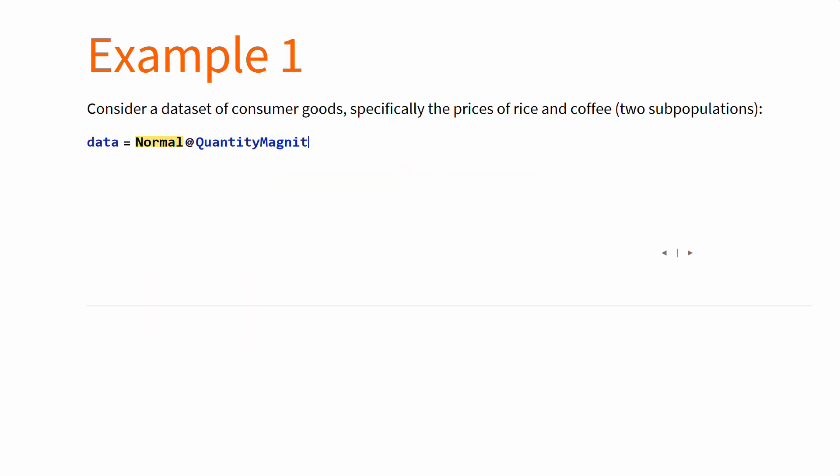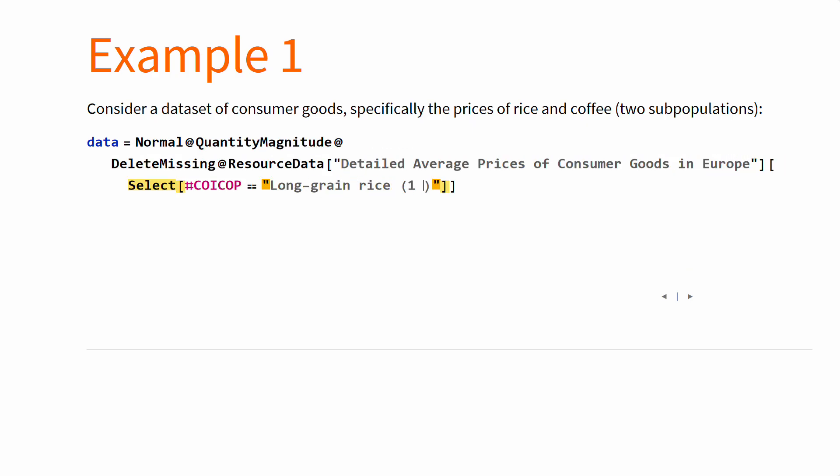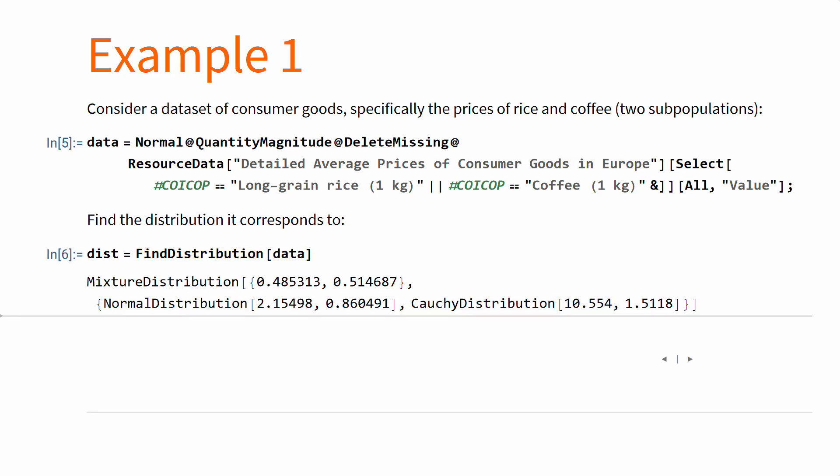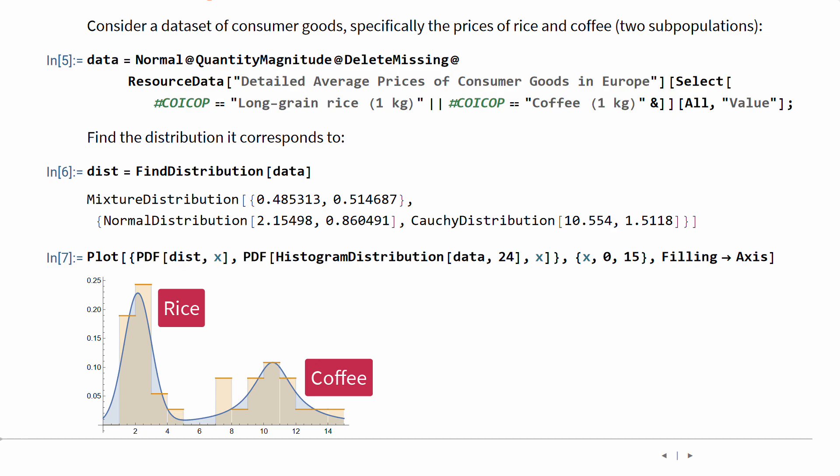Okay, for example, if you load consumer prices for rice and coffee and you ask find distribution for a distribution, it will give back a mixture distribution. Just visualize with the estimated distribution next to the data distribution, and you'll see coffee costs distinctly more than rice per kilogram. Meaning, using a bit of guessing and general knowledge, you were able to extract subpopulations. But you may argue we cheated a bit, since we know the data extracted had two clear subpopulations.